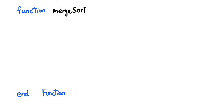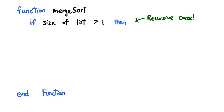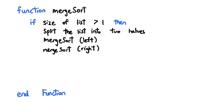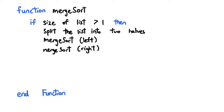So how will we actually write the Merge Sort code? That's really simple. First, we check to see if the list has more than one element — this is the recursive case. If it does, we split the list into two, and then call Merge Sort on each of these sublists. By the time Merge Sort has returned to this point, after any number of recursive calls, each sublist has already been sorted.